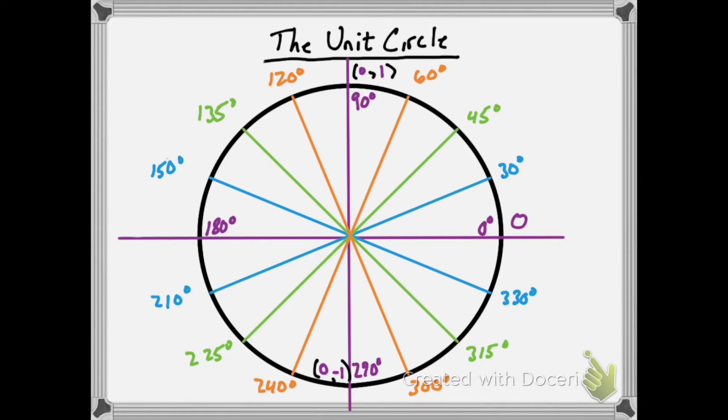To remember the radians on the unit circle, I start pretty naturally. On the right side, we'll have zero or two pi radians. 180 degrees would be pi, half of that, and 90 degrees would be half of that, pi over 2. At the bottom, we'll have 3 pi over 2.